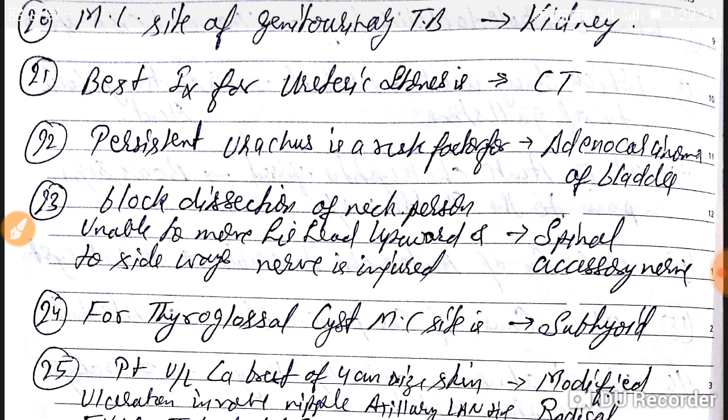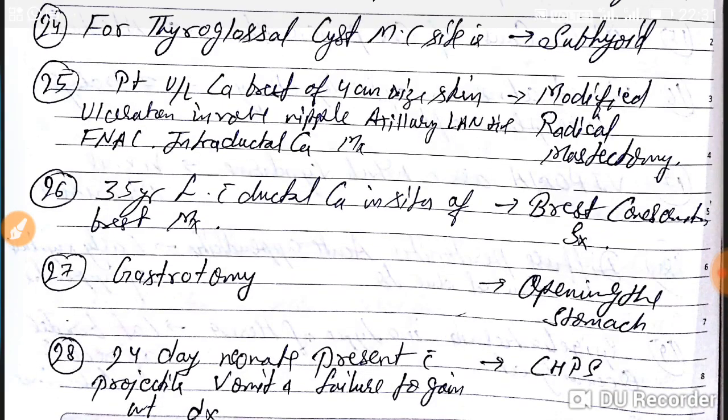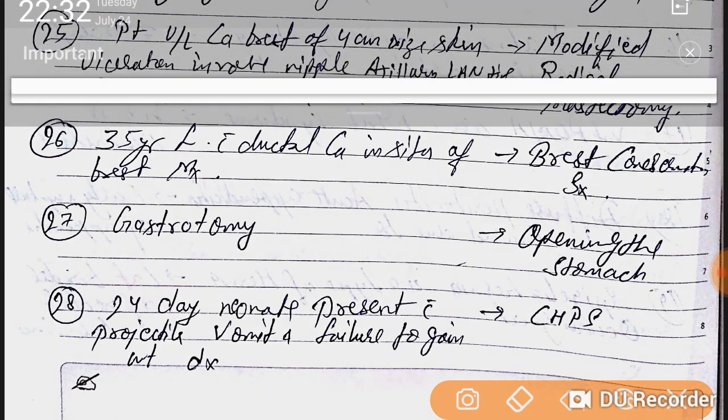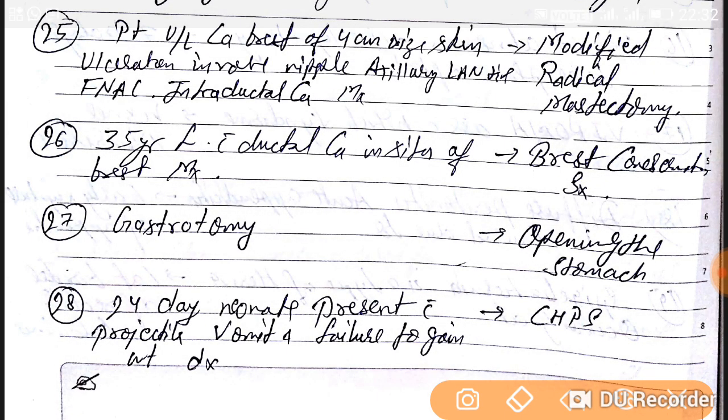Question number 25: a patient with unilateral carcinoma of the breast, four centimeters in size, with skin ulceration, nipple involvement, axillary lymph node positive, and FNAC showing intraductal carcinoma — management is modified radical mastectomy.